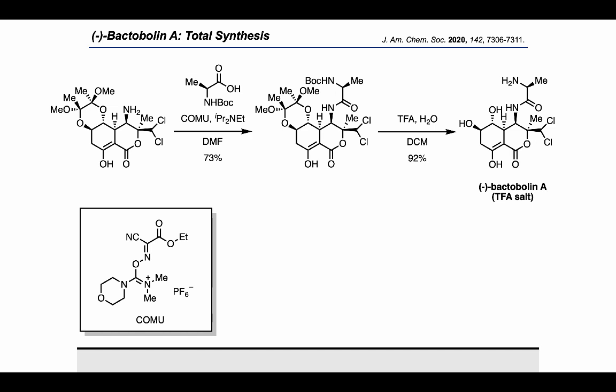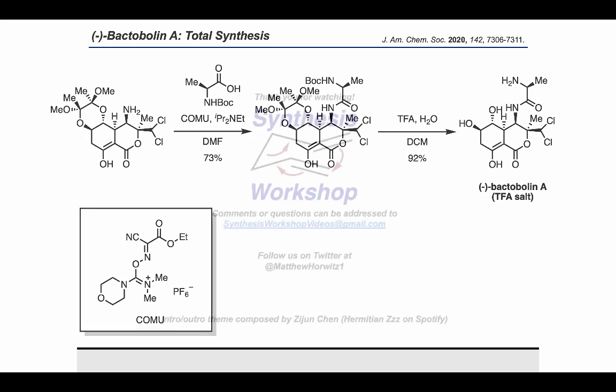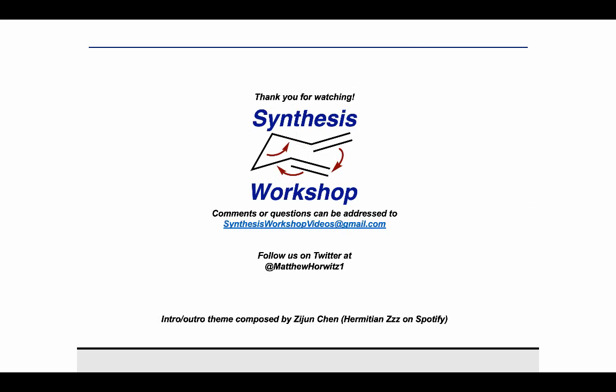This could also be used to form the free base. With that sequence, the Zvendo group wrapped up the synthesis of Bactobolin A using a few very elegant disconnections, most prominently a diastereoselective C–H amination. Thank you for joining us today on Synthesis Workshop. Please support us by liking and subscribing, and feel free to send us any questions and comments. Follow us on Twitter to stay up to date, and see you all next time!